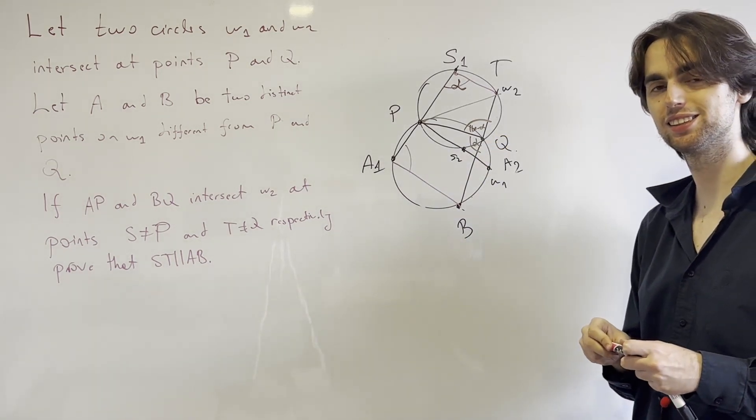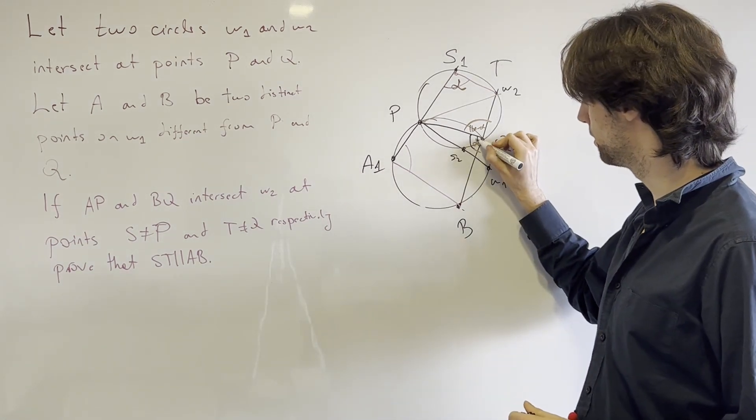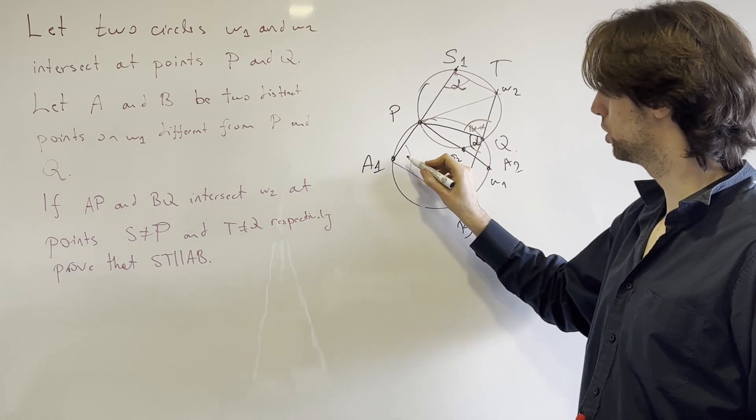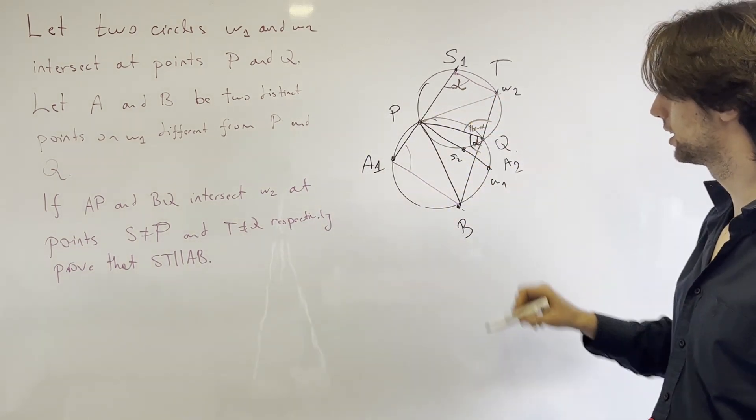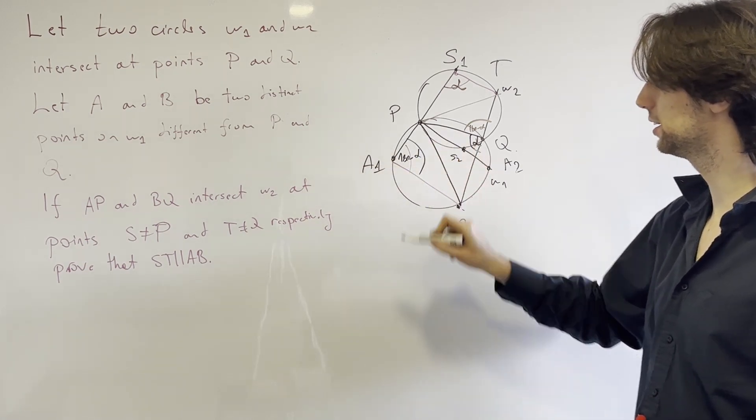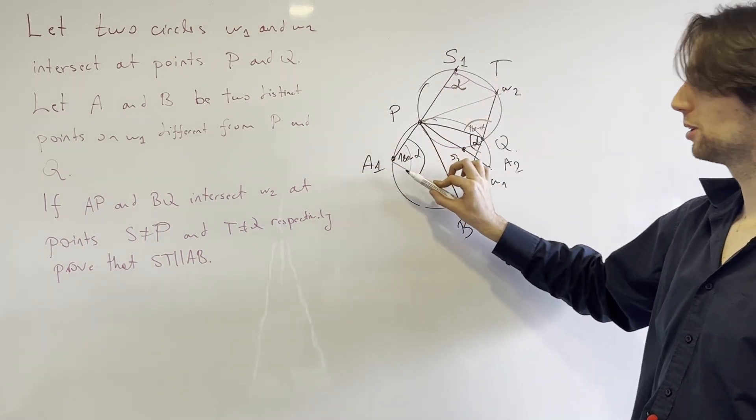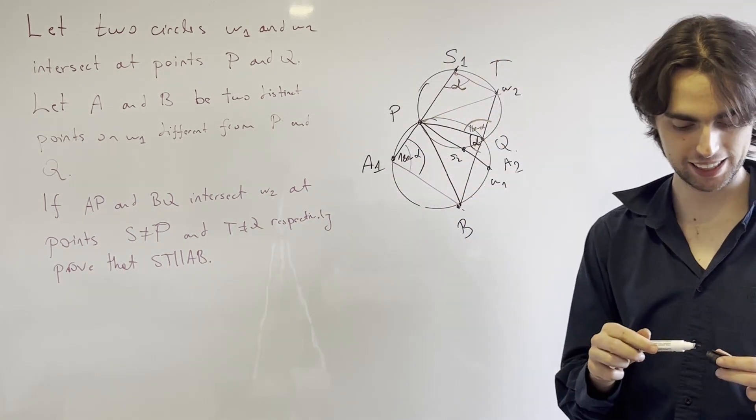And now what? And now what? And the answer is, well this whole angle is alpha. So because we're now looking at the chord PB, we have this angle right here is 180 minus alpha.